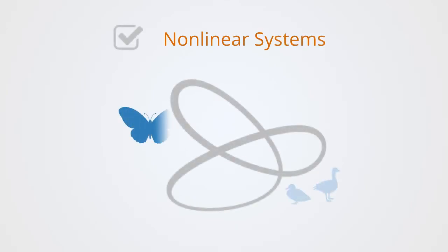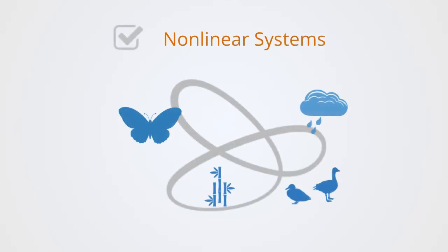Next, we will be looking at non-linear systems theory within ecology as we talk about feedback loops, how ecosystems self-organize, the non-linear dynamics of abrupt ecosystem regime shifts, stability landscapes, and ecological networks.